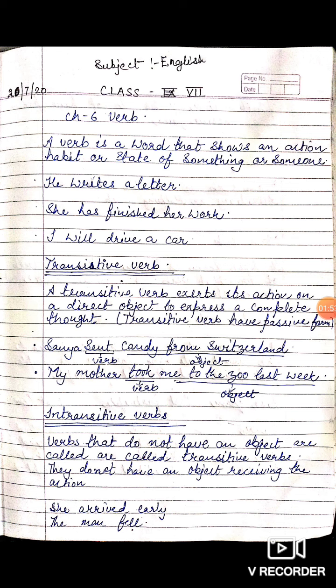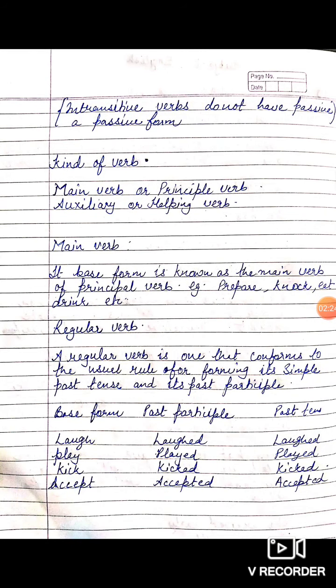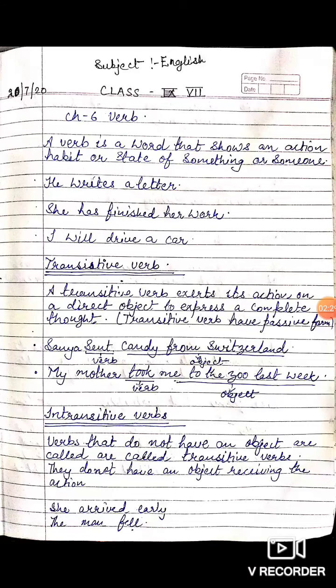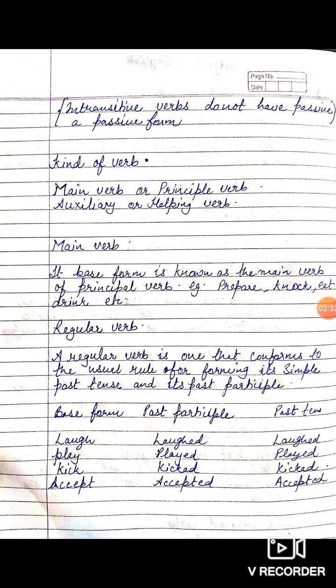Now we will learn intransitive verb. Verbs that do not have an object are called intransitive verbs. They do not have an object receiving the action. They are complete and do not require any kind of direct object to complete their sense. For example: she arrived early, the man fell. Make this sure — intransitive verbs do not have a passive form.